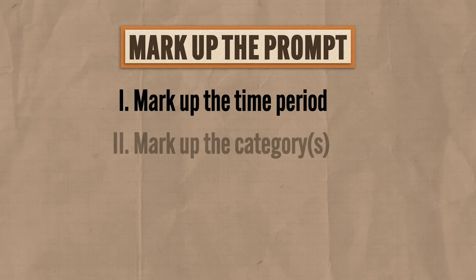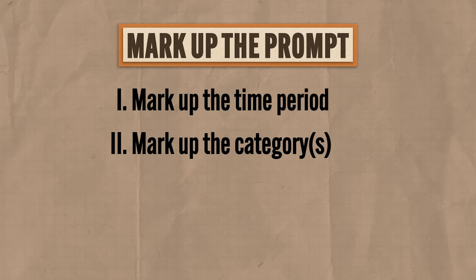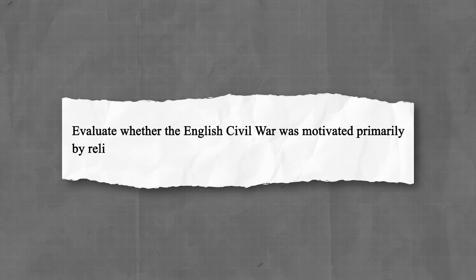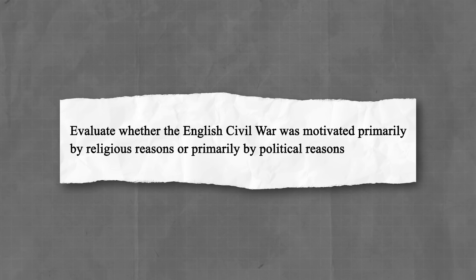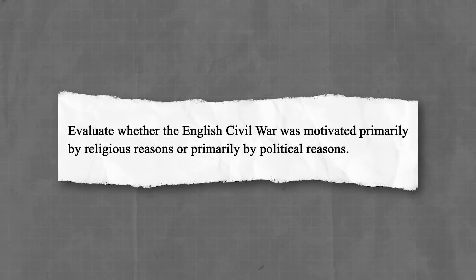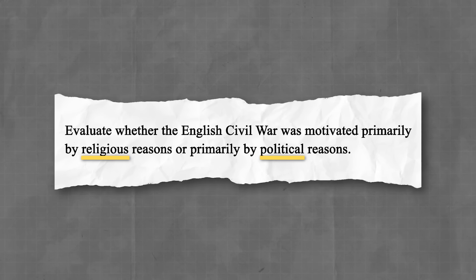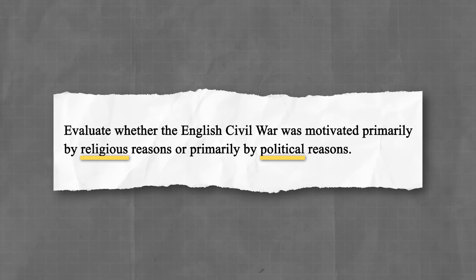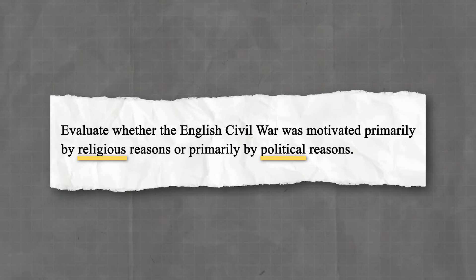The second thing you need to do is mark the category or categories in which they want you to write. For example, the 2022 AP Euro DBQ asked you to evaluate whether the English Civil War was motivated primarily by religious reasons or primarily by political reasons. In that prompt, you need to underline 'religious' and 'political' — those are the categories that will define your essay, and in this case one of them is going to be more important than the other.